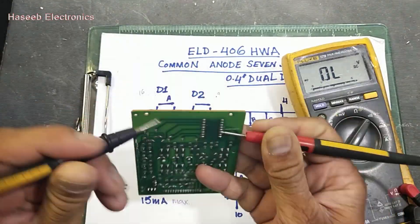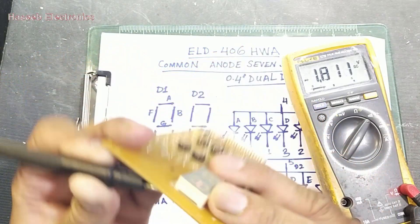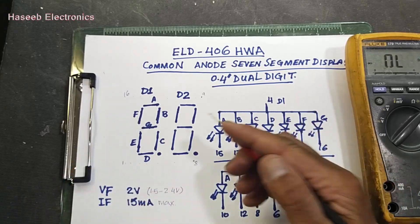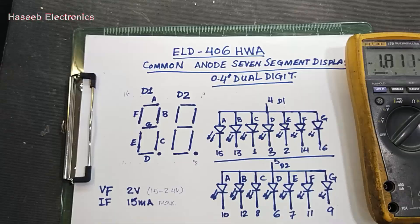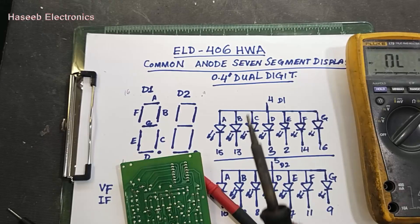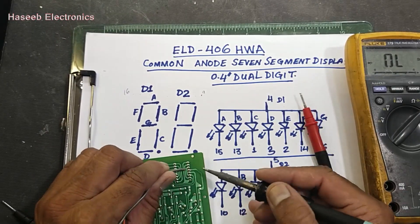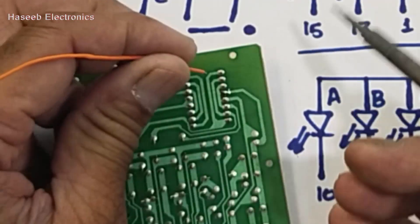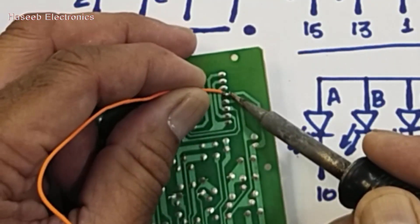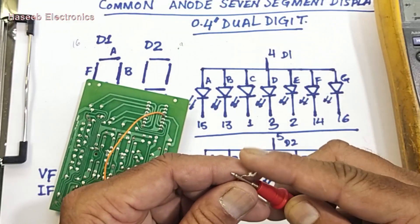If you connect black lead at pin number 16, this segment G is turned on. Now 4 and 15, this segment should turn on. Here we have pin number 15. To make it easy, let me connect some wire to assist us. I will connect this jumper wire to connect multimeter. Now it will be easy.